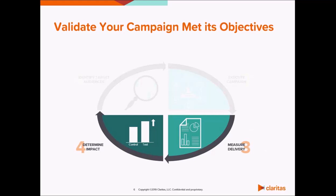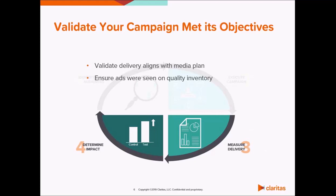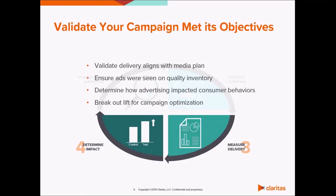In this webinar, I'll talk about the value of measuring a marketing campaign. Measurement is crucial to campaign optimization, with insights like validating the execution of a campaign — including who ads were served to, the inventory where they were reached, and the pacing of impressions served. Making sure an impression served was an impression seen — seen on quality inventory and seen by human eyes. Calculating the total lift in consumer behaviors that resulted directly from seeing the advertisement. And finally, breaking out the lift by different components of a campaign, like target audiences, creative, and property.